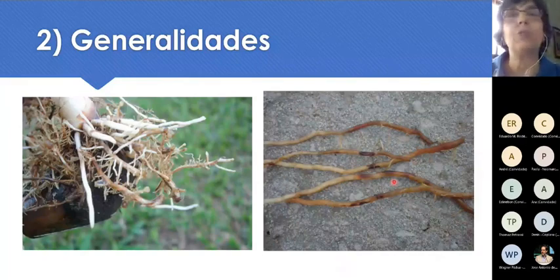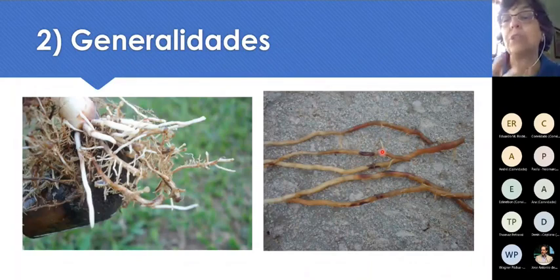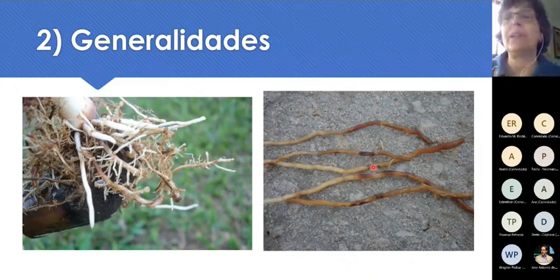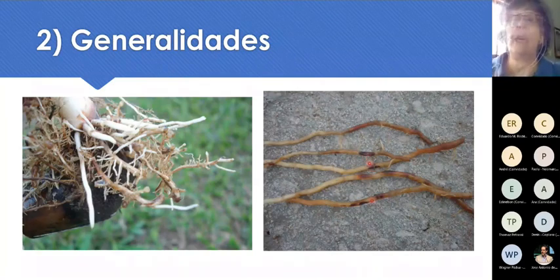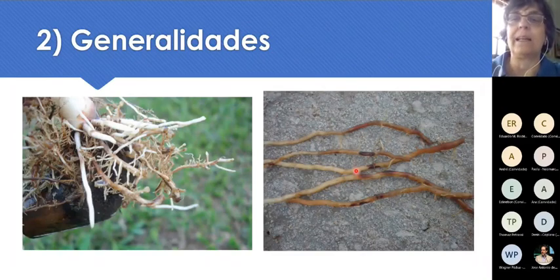Pratylenchus, por outro lado, não causa galhas — ele causa necroses nas raízes. Da mesma forma, não é possível arrancar uma touceira de cana, olhar as raízes, ver essas necroses e afirmar que há Pratylenchus, porque outros problemas como cigarrinha das raízes causam sintoma bem parecido. Então, se quisermos ter certeza da ocorrência de nematóides numa área, precisamos coletar uma amostra e mandar analisar.